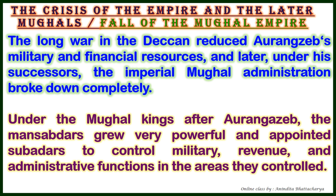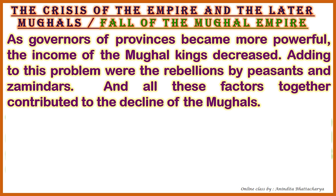Under the Mughal kings after Aurangzeb, the Mansabdars grew very powerful and appointed Subedars to control military, revenue, and administrative functions in the areas they controlled. As governance of provinces became very powerful, the income of the Mughal kings decreased. Adding to the problems were rebellions by peasants and zamindars, and all these factors together contributed to the decline of the Mughals.